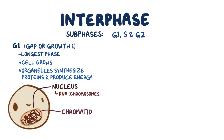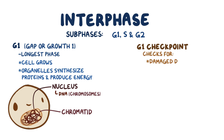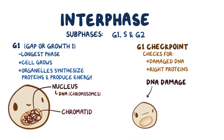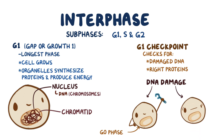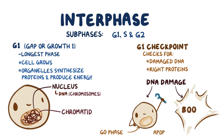At the end of G1, there's a cell cycle control point called the G1 checkpoint, where the cell checks to see if the DNA is not damaged and it synthesized the right proteins in the correct amount. If it turns out that there is any reason for the cell not to divide, like having DNA damage, things can go one of two ways. The cell can either enter a non-dividing state called the G0 phase, where the DNA repair mechanisms try to fix the problem, or the cell can self-destruct in a process called apoptosis.